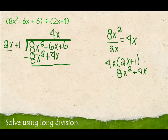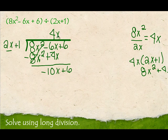8 minus 8 is 0, and that's why we picked 4x. Negative 6x minus 4x is negative 10x. And just like regular long division, I bring down the 6. Now I'm going to start all over again. I'm going to take the first term, negative 10x, and divide it by 2x again.